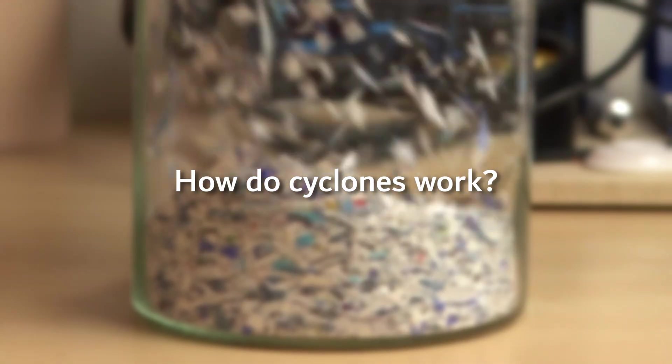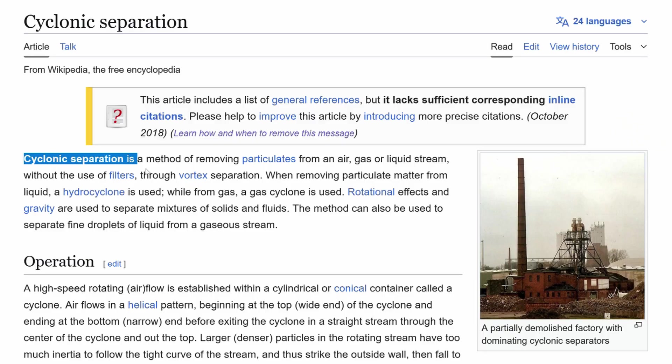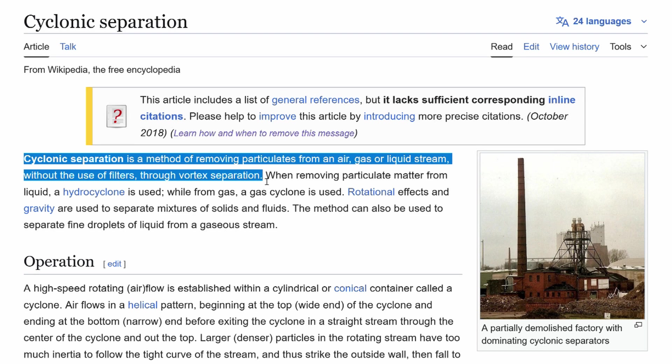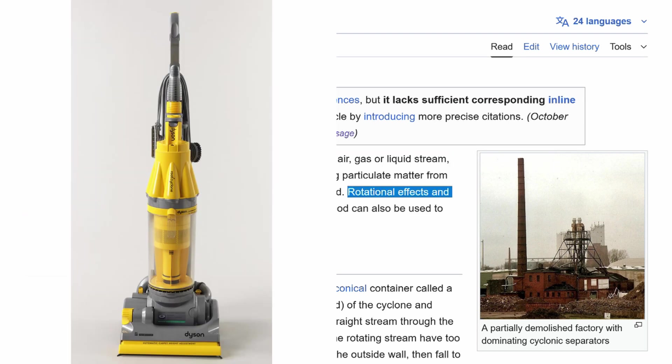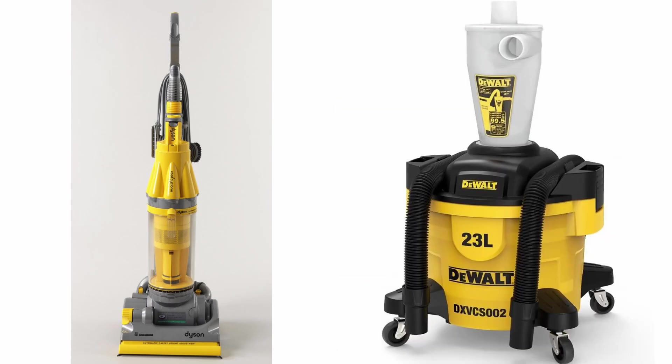But how do cyclones actually work? Cyclones are mechanical devices used to separate matter from airstream or liquids. Dyson vacuums use their principle, as do sawdust separators.